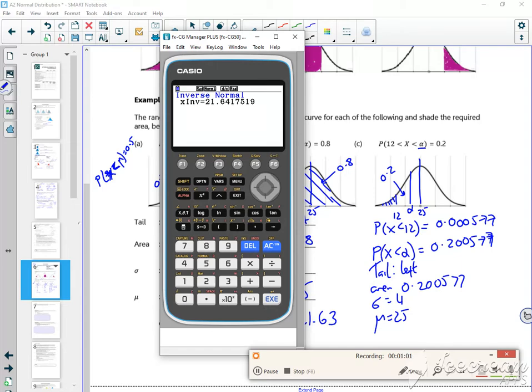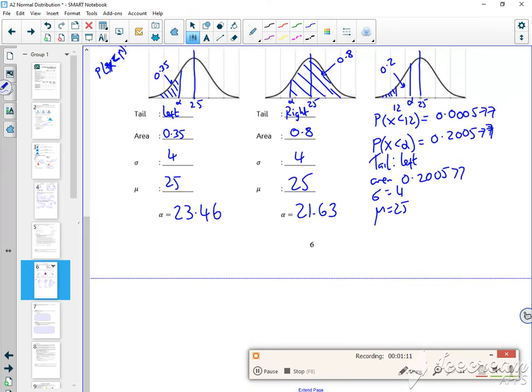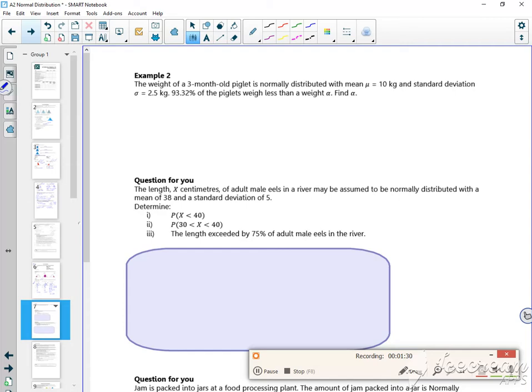21.64, yeah. So it gives me 21.64. Why is it so annoying? So it gives me an alpha of 21.64. I had to really think about that one because it told you that the bit between 12 and alpha was 0.2. So I found out what the probability for the 12 was and added the 0.2 to find out the alpha. That's not really straightforward, is it?